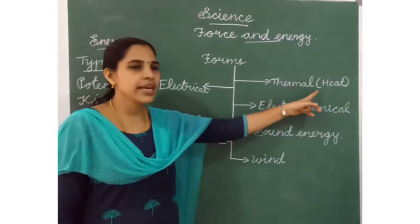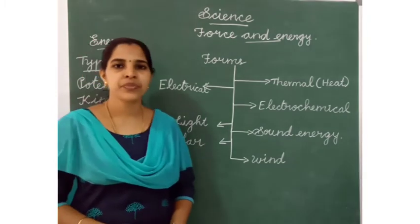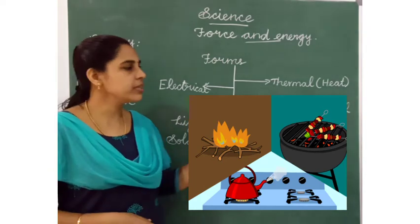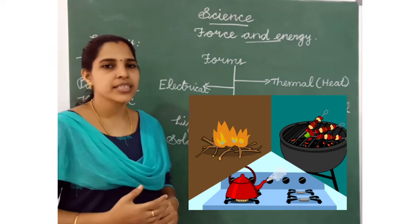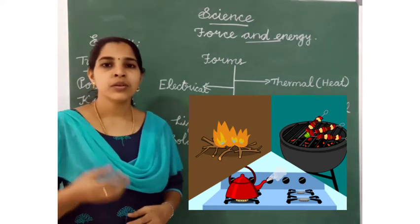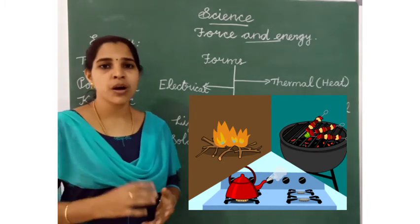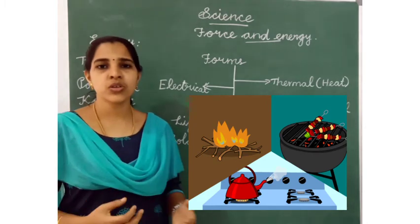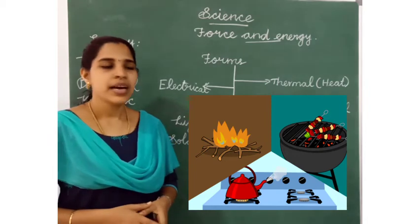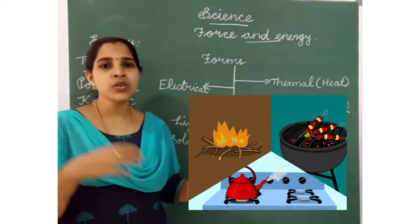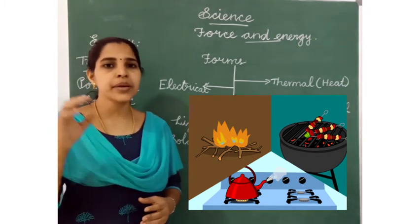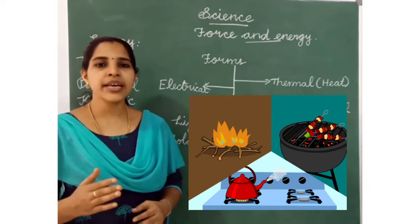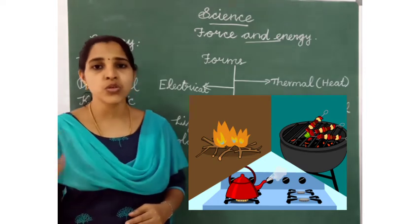Thermal or heat energy. What is the meaning of thermal or heat energy? We get heat from the sun. The sun is the main source of heat. Heat energy is used for cooking, boiling water, and keeping things warm. We also get heat energy from coal, kerosene, petrol, and LPG gas cylinders. The temperature of our body also produces heat energy. We measure heat energy as temperature, using a device called a thermometer.